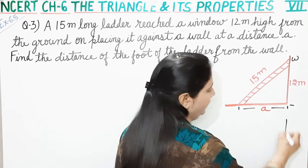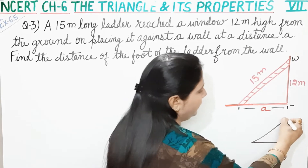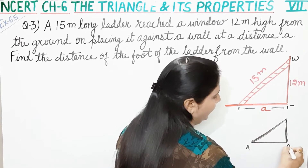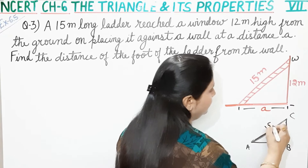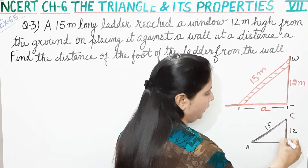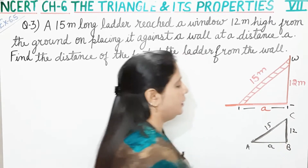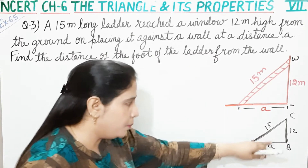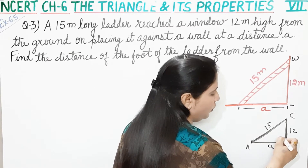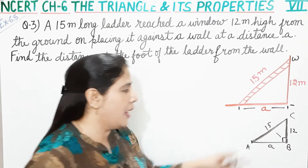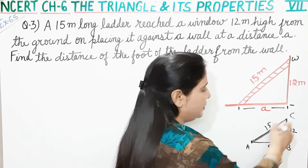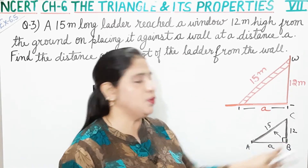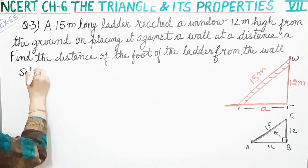Agar hum dhyan se dekhe to yeh right triangle bana raha hai. This is ladder. Jo hypotenuse ka square hai — isme hypotenuse kya hai? Yeh 90 degree bana raha hai, aur uske saamne wali side hypotenuse hogi. To hypotenuse ka jo square hai woh barabar hota hai sum of the square of the remaining two sides. To hame isi ko use karenge solution me.